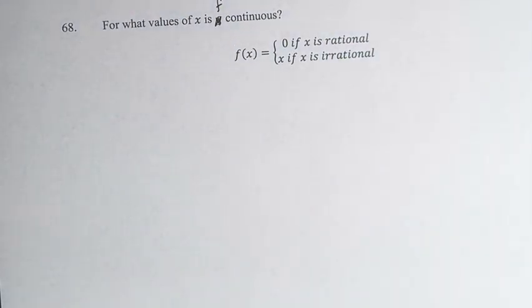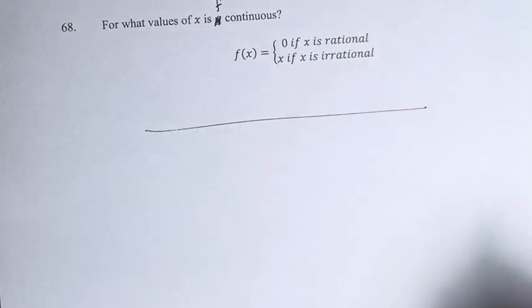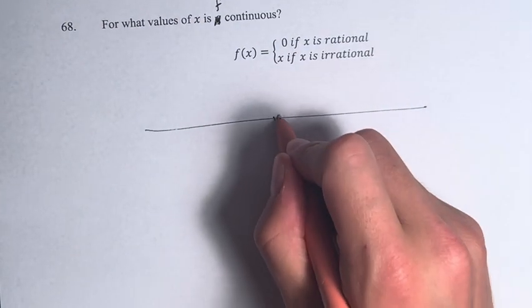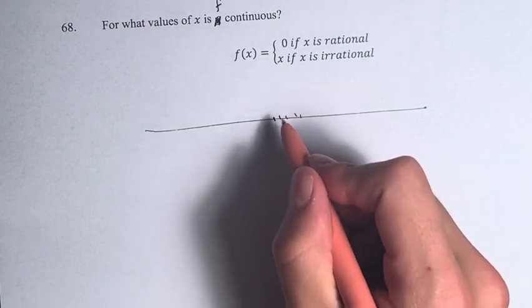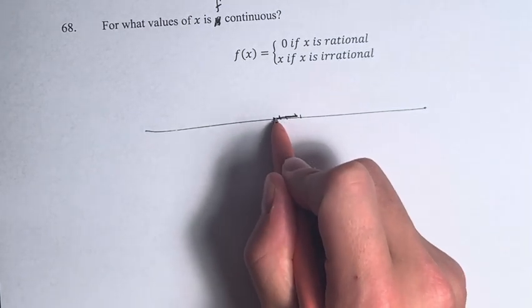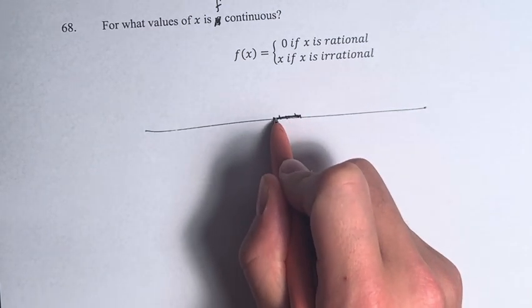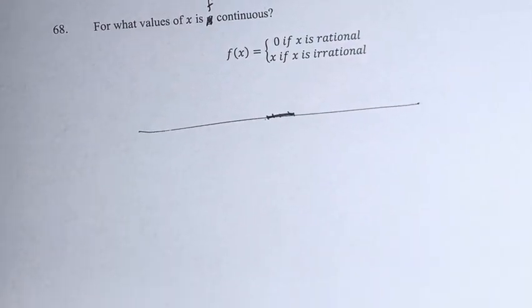As we learned in the last problem, there's no point on the number line where you're going to get a clump of rational numbers where the function is going to be 0 over a discrete length of the number line. You're always going to be jumping between rational and irrational numbers as we go across the number line.